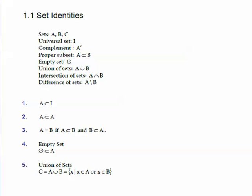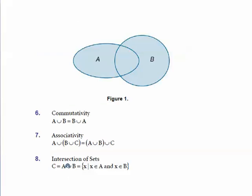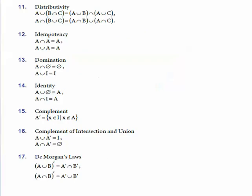For union and intersection of sets, there are three main properties: commutativity, associativity, and intersection of sets. Other properties are distributivity, idempotency, domination, identity, complement, complement of intersection and union, and De Morgan's law.